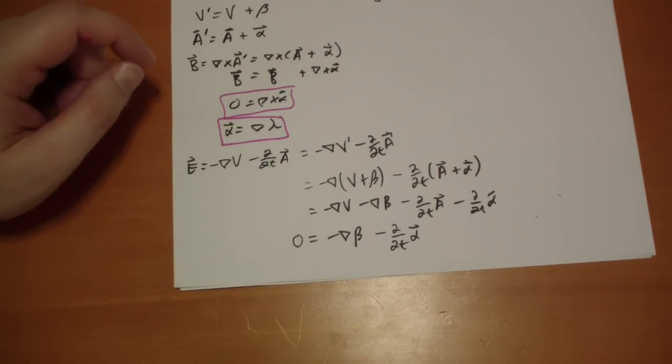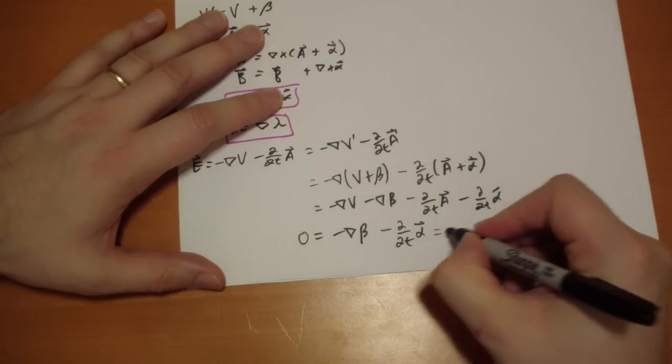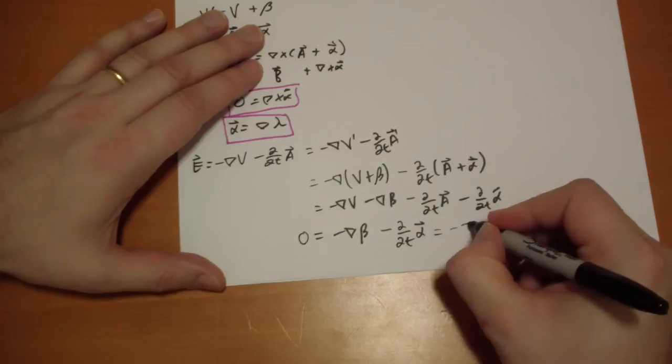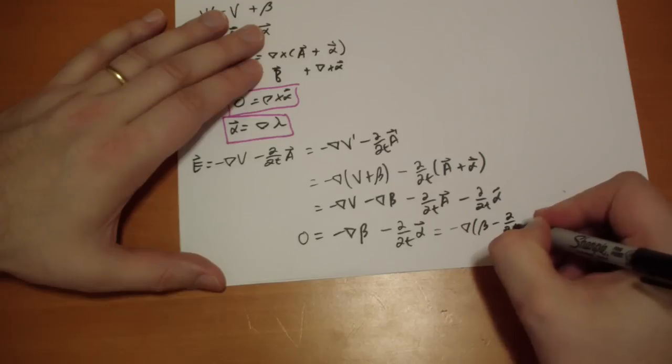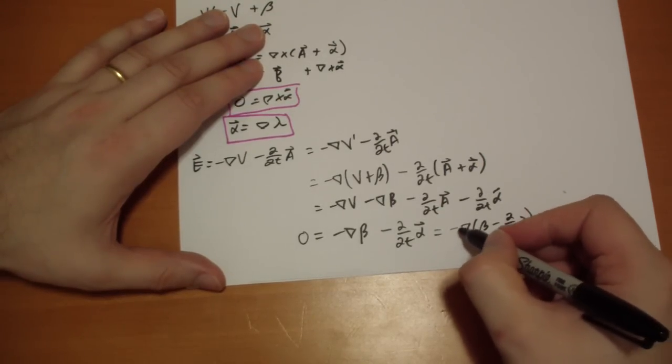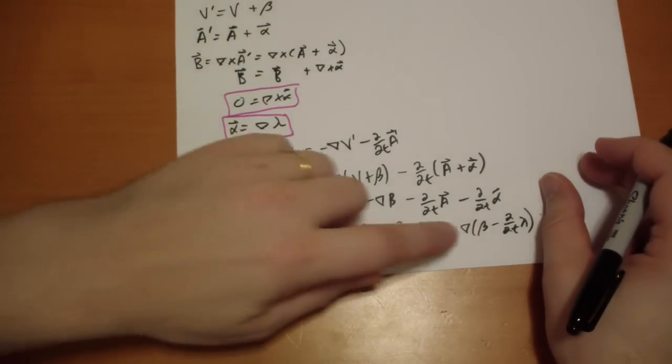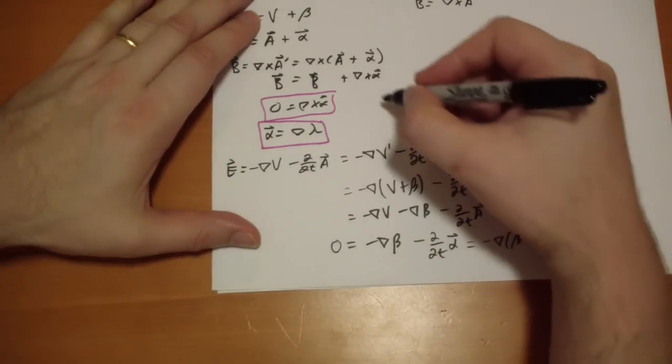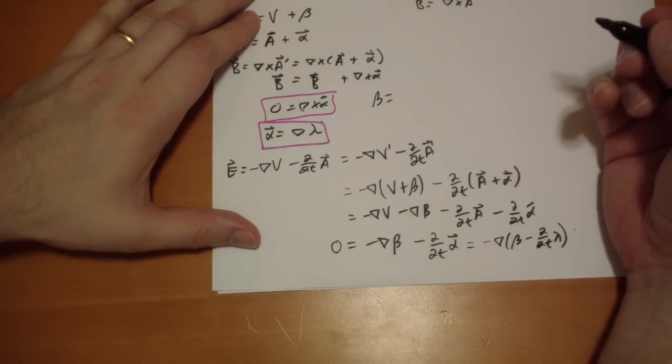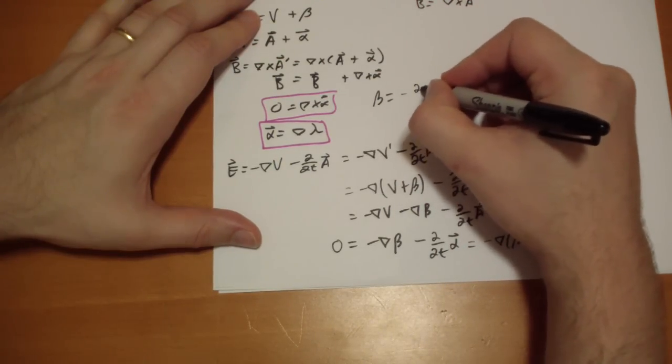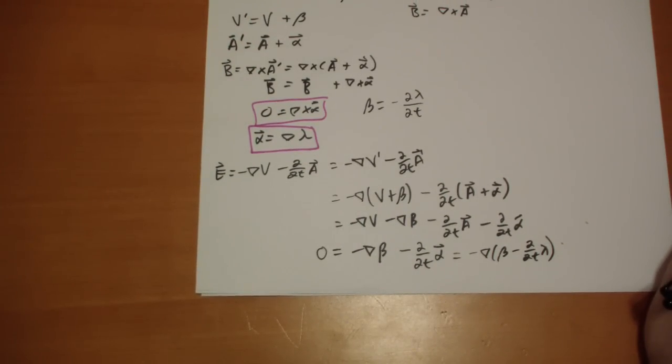So the alpha we found was the gradient of lambda. So we can write this out this way. So we have the gradient of beta minus the time derivative of lambda. So we basically brought the gradient out. And so we basically get that this beta has to be equal to minus the time derivative of lambda.